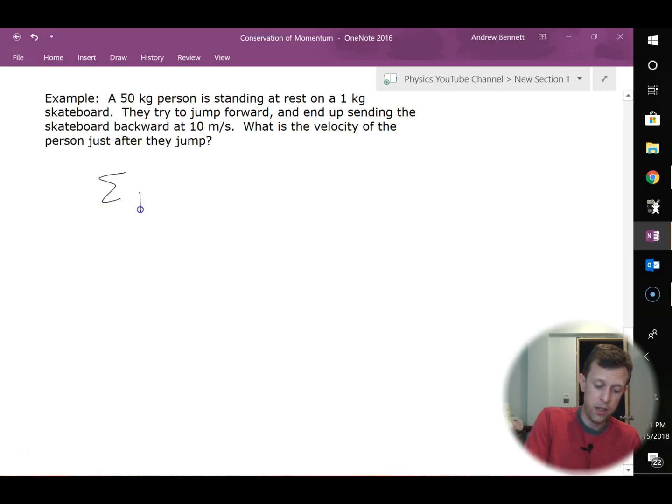So I'm going to write that out as total initial momentum equals total final momentum. And then I usually just go through and expand this a little bit and get it into a form that's going to work with this scenario for me. I've got two objects here, a person and a skateboard, and so I'm just going to write out a term for each one of them on each side of the equation. So on the initial side, I've got the initial momentum for the person. I'll put that as PPO plus the initial momentum for the skateboard. We'll say PSO has to equal the final momentum for the person, PP, plus the final momentum for the skateboard, PS.